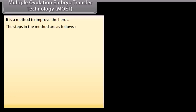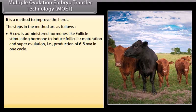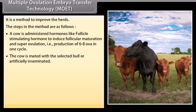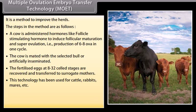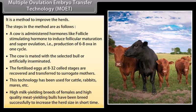Multiple ovulation embryo transfer (MOET) technology is a method to improve herds. A cow is administered hormones like follicle stimulating hormone to induce follicular maturation and super ovulation — production of 6 to 8 ova in one cycle. The cow is mated with a selected bull or artificially inseminated. The fertilized eggs at 8 to 32 cell stages are recovered and transferred to surrogate mothers. This technology has been used for cattle, rabbits, mares, etc. High milk yielding breeds and high quality meat yielding bulls have been bred successfully to increase herd size in the short term.